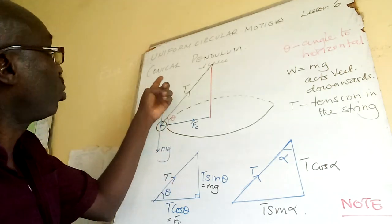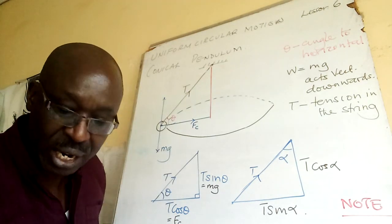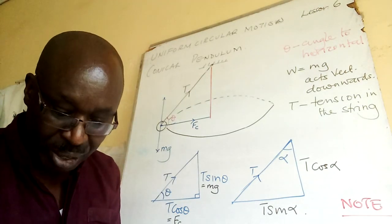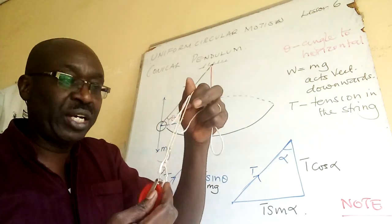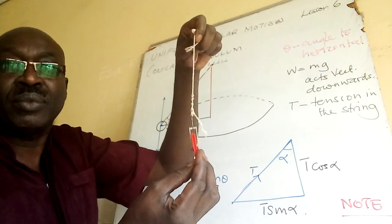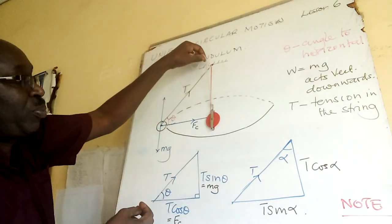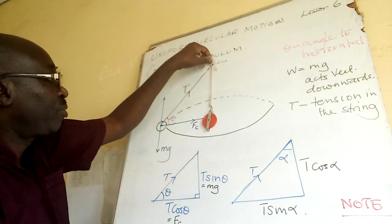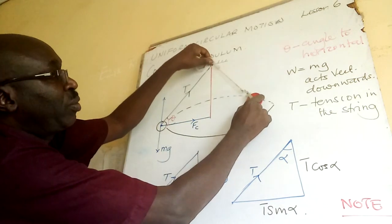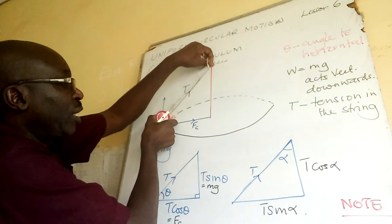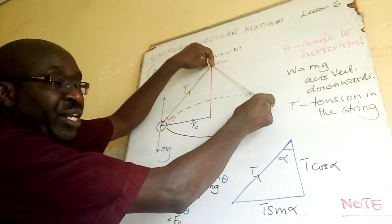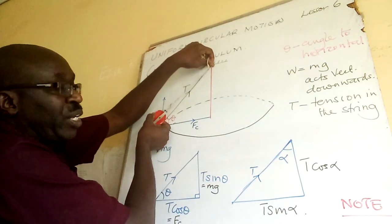So today we are going to learn about conical pendulum. Like this you have a string, so it is at rest position but at one point it will be there. It is moving in a conical way.